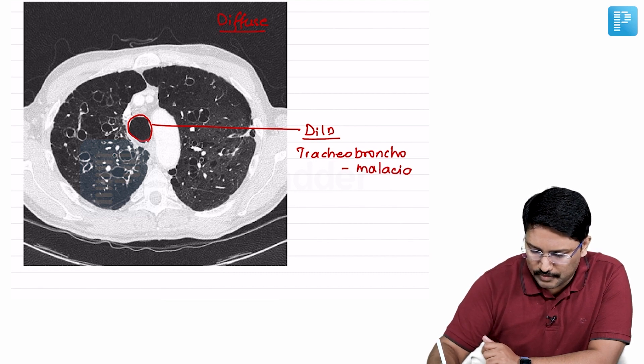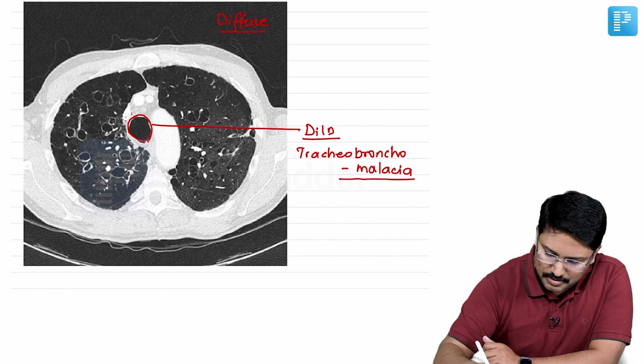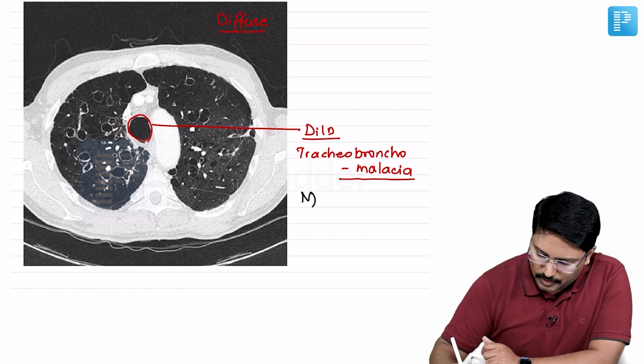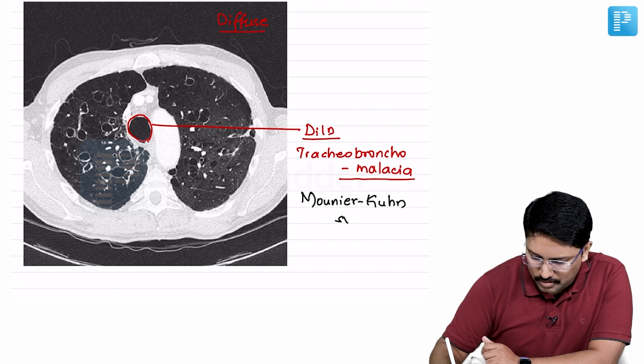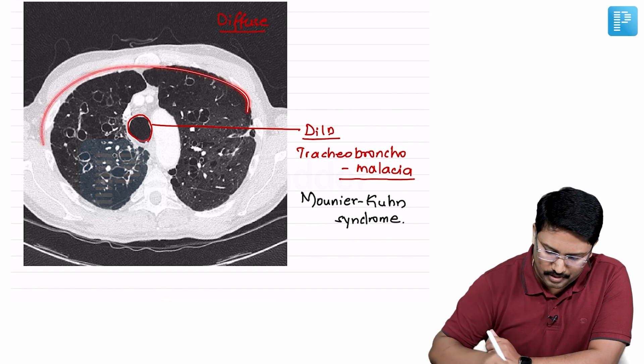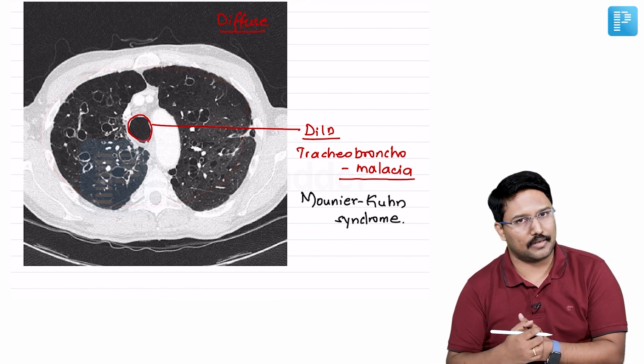So this dilation of the tracheal tree is because of congenital tracheal bronchomalacia. Which syndrome did we speak about when we spoke about congenital tracheal bronchomalacia? Mounier-Kuhn syndrome. So this is the HRCT of a patient with Mounier-Kuhn syndrome. Again, more diffuse as I have already told you - congenital.